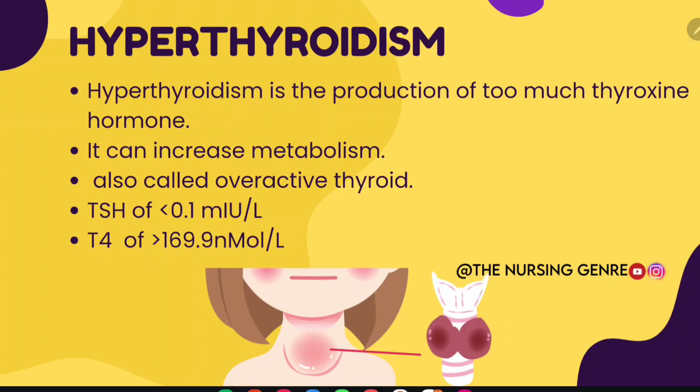Hyperthyroidism is the production of too much thyroxine hormone — also called overactive thyroid. It can increase metabolism. Lab values: TSH is less than 0.1, and T4 is greater than 169.9 nmol.